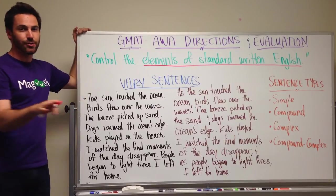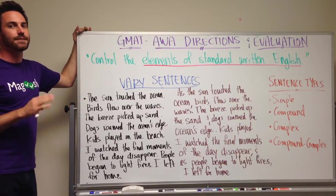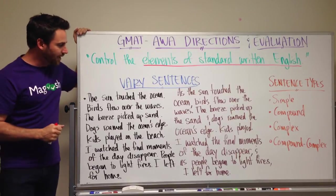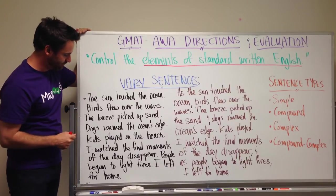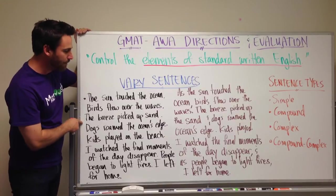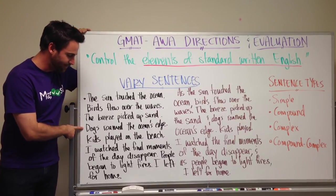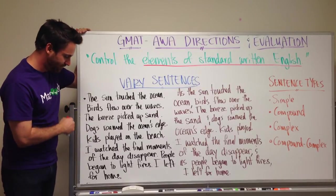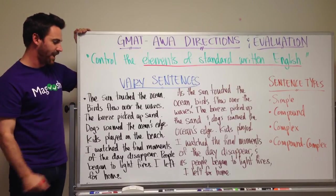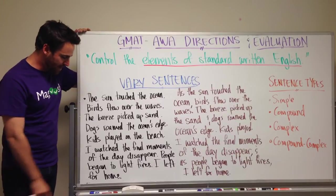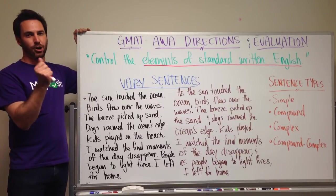The first one has no sentence variety at all — these are all simple sentences. 'The sun touched the ocean. Birds flew over the waves. The breeze picked up sand. Dogs roamed the ocean's edge. Kids played on the beach. I watched the final moments of the day disappear. People began to light fires.'